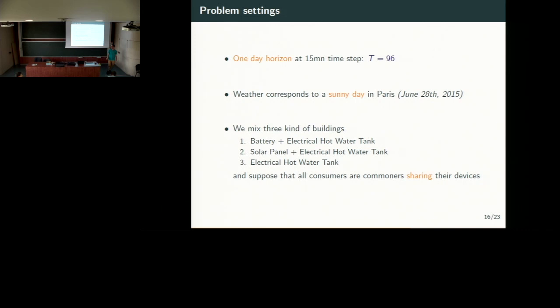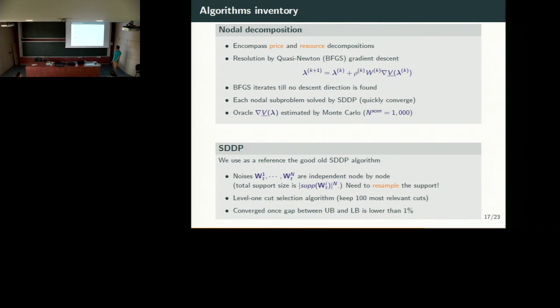We consider different kinds of buildings in our network: buildings with one battery and one electrical hot water tank, where you can store electricity either in the battery or by heating water inside the tank. Other buildings will have solar panels, and others will have only an electrical hot water tank. So we have heterogeneous dynamics inside each building. We suppose all people are benevolent and want to share their energy together — it's like an energy community.